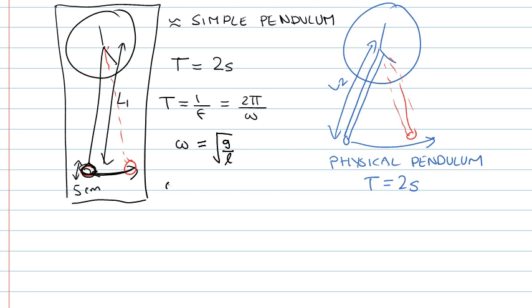So omega can be written as two pi over the period T, or it can be written as the square root of g over l. So now what we can do is rearrange this expression to make l the subject of the equation. So squaring both sides gives us four pi squared over T squared equals g over l. So our length l can be written as g times T squared over four pi squared.